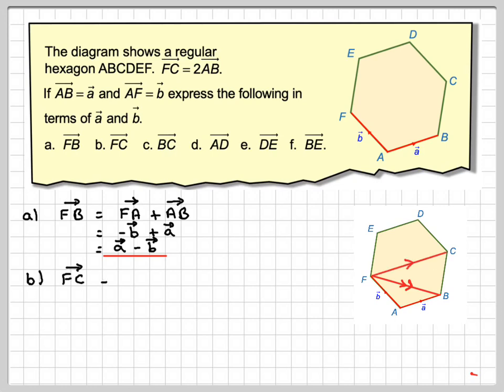Vector FC, so vector FC is that one. Let's see how we're going to go there. We can go 2 times AB, because we're told that in the question. So that's going to be 2a.